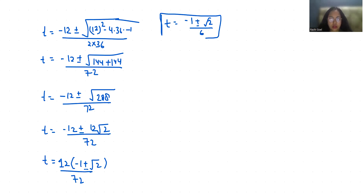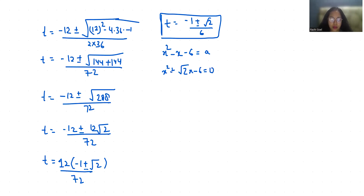Now replacing the value of t: the equation x² - x - 6 = t·(6x) gives x² ± √2·x - 6 = 0. So x = (1/2)(± √2 ± √26).